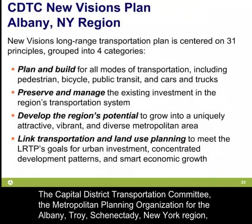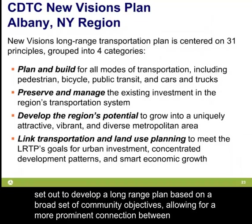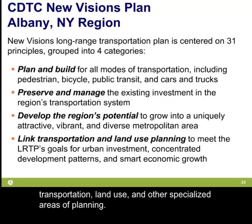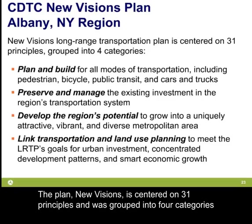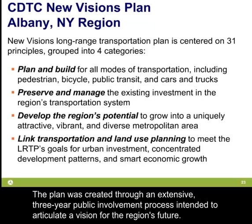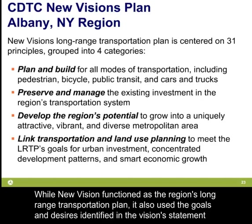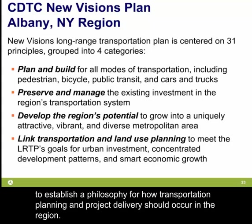The second case study highlights the Capital District Transportation Committee's Long-Range Transportation Plan update. The Capital District Transportation Committee, the Metropolitan Planning Organization for the Albany-Troy-Schenectady, New York region, set out to develop a long-range plan based on a broad set of community objectives, allowing for a more prominent connection between transportation, land use, and other specialized areas of planning. The plan, called New Visions, is centered on 31 principles grouped into four categories, created through an extensive three-year public involvement process to articulate a vision for the region's future.